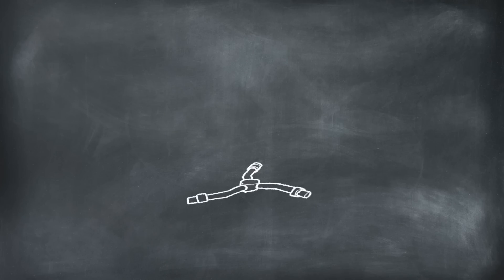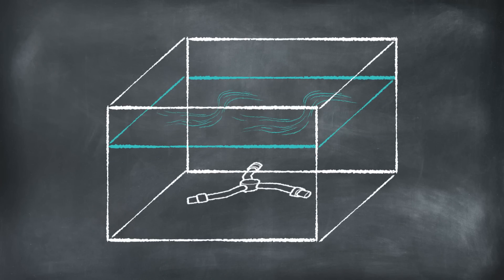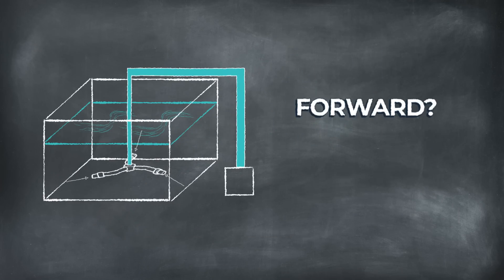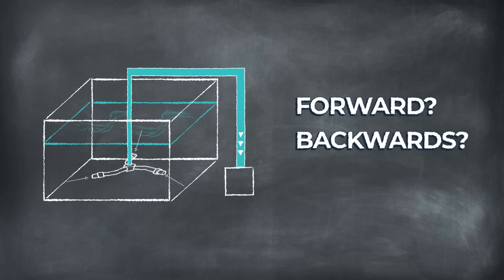But what would happen if the same sprinkler was submerged in water and the pump direction was reversed so that the arms sucked in water rather than pushed it out? Will the sprinkler spin forwards, backwards, or not at all? Pause here and think about it.